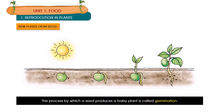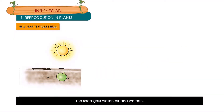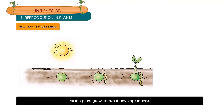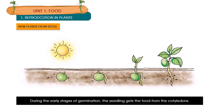If a seed gets the right amount of water, air and warmth from the sun, it will produce a baby plant, or seedling. The process by which a seed produces a baby plant is called germination. The seed coat breaks and the baby plant emerges. The baby plant develops roots and a shoot. As the plant grows, it develops leaves. The cotyledons shrink and fall off. During the early stages of germination, the seedling gets its food from the cotyledons. As the food inside the cotyledons is used up, the seedling gets its food from the soil.